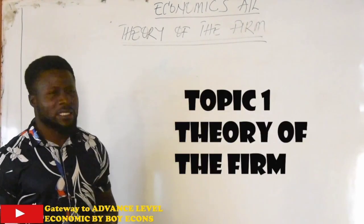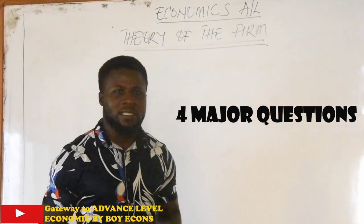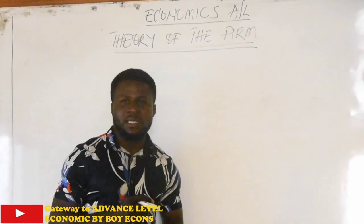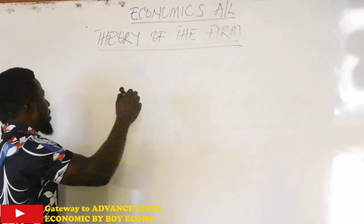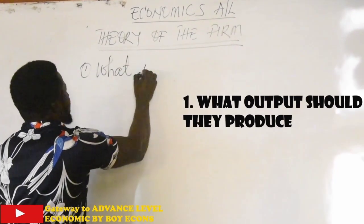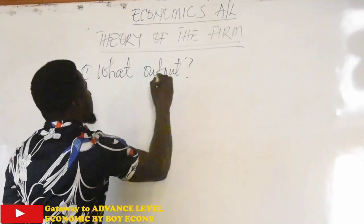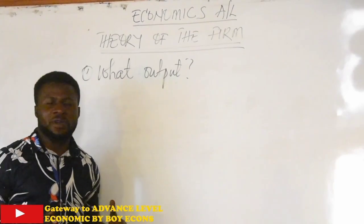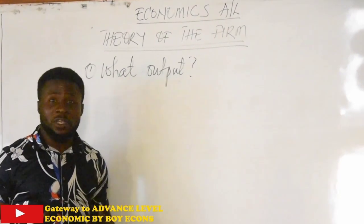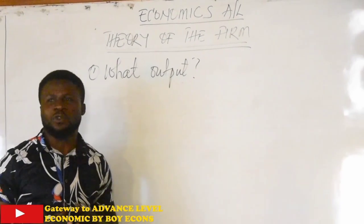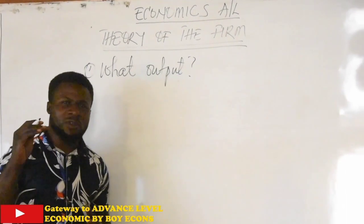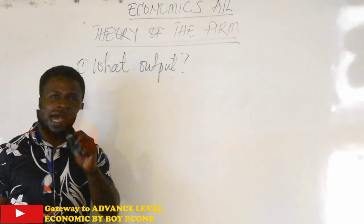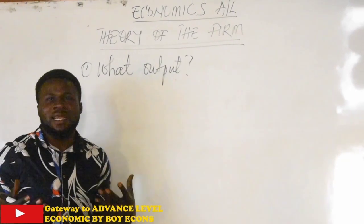So we are going to be looking at four major questions that business entities which we call firms here have to answer. The very first question that a firm has to answer is what output should they produce? This question is very imperative because you do not just produce as an entrepreneur or businessman because you are able, because you are financially able or maybe physically or mentally able to produce. You need to produce a particular quantity, a particular output, and we are going to discover the little secret of how to determine that output.